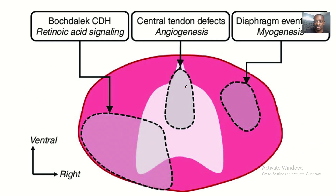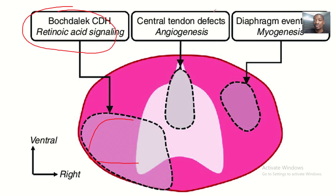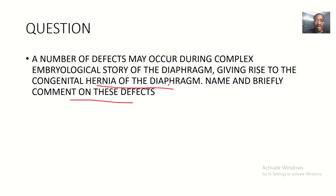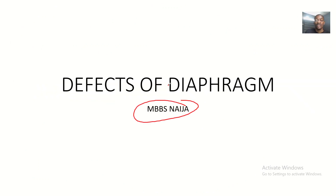To recap: defects of the diaphragm leading to hernia can occur through the foramen of Morgagni anteriorly, through the foramen of Bochdalek posterolaterally, and through a large esophageal opening as the central hernia. That's it about the defects of the diaphragm leading to hernia. See you guys in the next tutorial, bye for now.